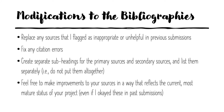Now, to the bibliographies. The suggestions I'm giving here are pretty standard, but just to clarify: I'd like you to replace sources that I flagged as inappropriate or unhelpful. Please fix any errors in your citations and make sure they are complete. Also, please create separate subheadings for the primary sources and the secondary sources — list them separately, not together. And feel free to make changes to your bibliography as you improve on things. What you've got right now is not written in stone; even if I said that sources were okay in the past, you can make changes as your research evolves.